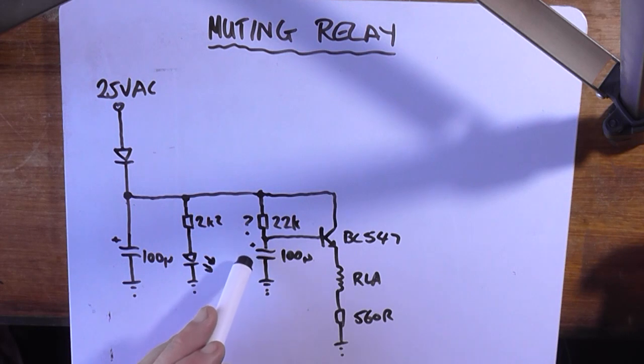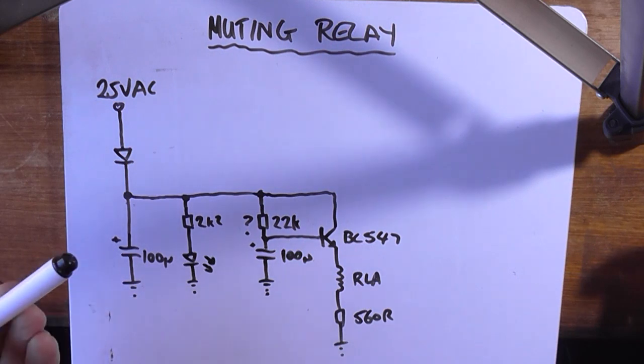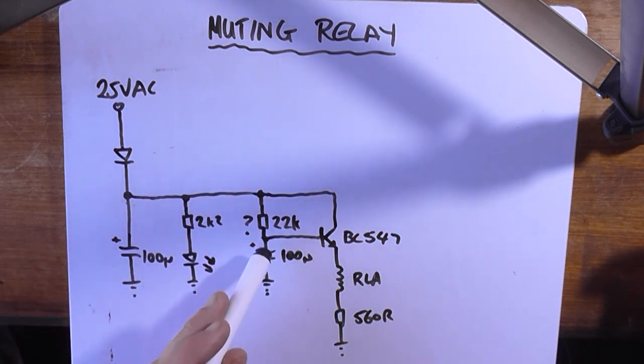Then it goes with this 100μF capacitor as an RC network, which provides a delay constant to this BC547. I chose that because its collector to emitter is roughly 45V, which should be plenty. And that goes through our relay coil.